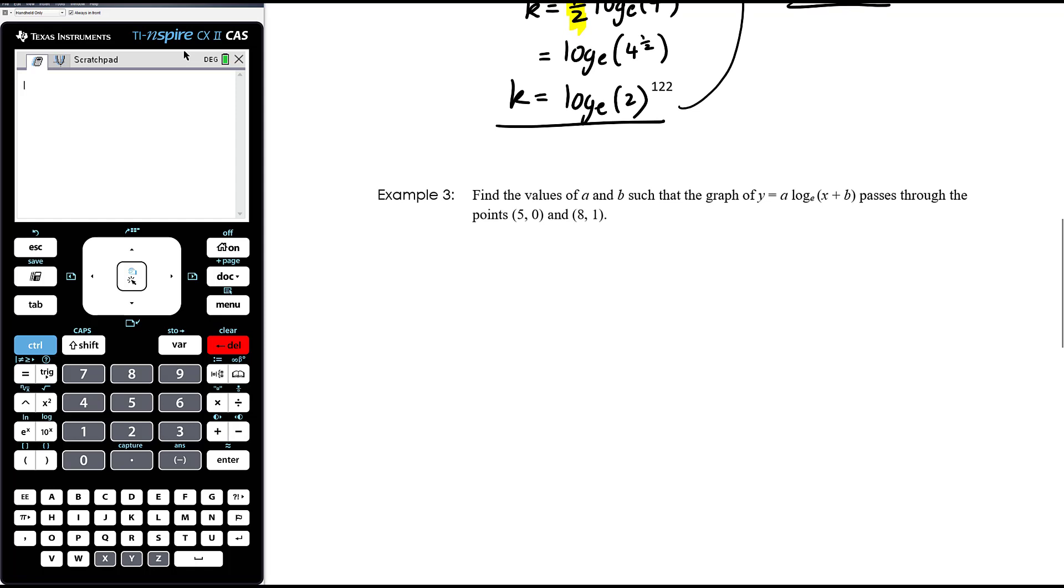Find the values of a and b such that the graph of y equals a times log e of x plus b passes through the points 5, 0 and 8, 1. So again, let's sub 2 points in. So subbing in the point 5, 0 when x equals 5, y equals 0. 0 equals a times log e of 5 plus b. And subbing in the point, we'll call that equation 1 maybe. Actually no, we can actually solve this for b because of the 0. So we're actually not going to have simultaneous equations because we can use this information to find b and then we can find a after that. So dividing both sides by a means that a is going to disappear. And then we can change from a log to an exponential. So e to the power of 0 equals 5 plus b. So that's 1 equals 5 plus b. And subtracting 5 from both sides, b is negative 4. Okay, so we've found the value of b.